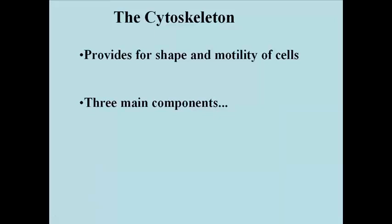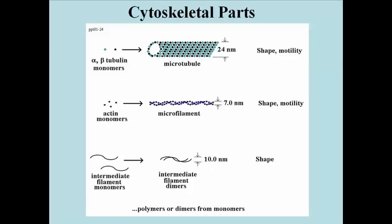The cytoskeleton is a uniquely eukaryotic phenomenon. The three main components of the cytoskeleton provide shape to cells and participate in motility. And here they are.